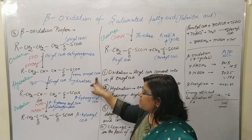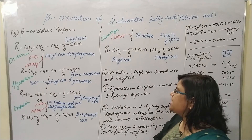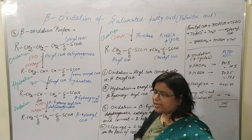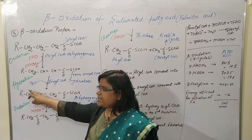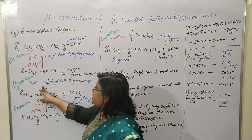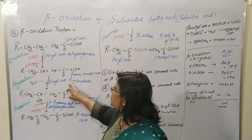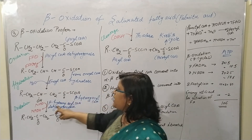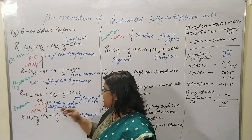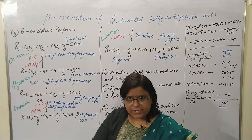The second reaction is hydration. The enoyl coenzyme A is converted into beta-hydroxy-acyl coenzyme A. A water molecule reacts with the help of the enzyme enoyl coenzyme A hydratase. As a result, a hydroxy group is attached to the beta carbon, generating beta-hydroxy-acyl coenzyme A.